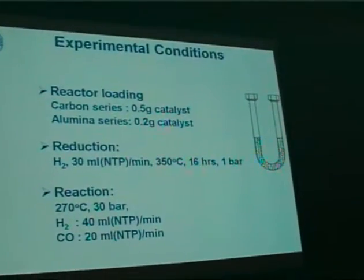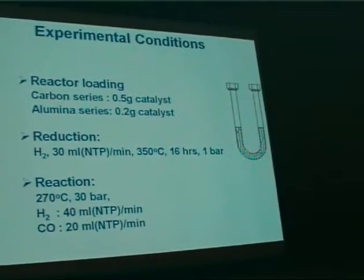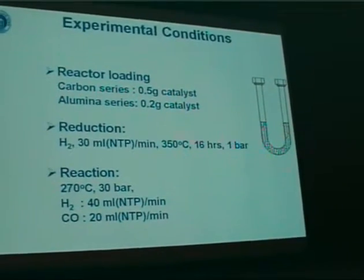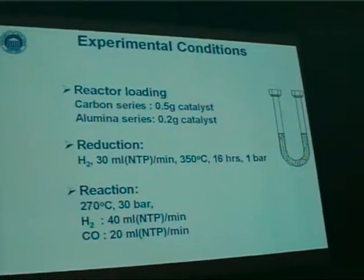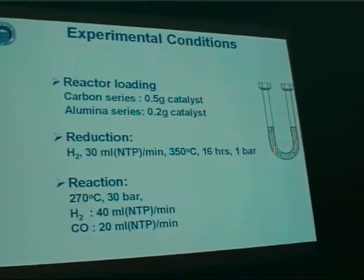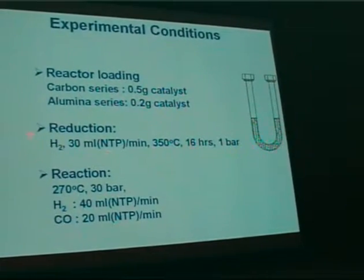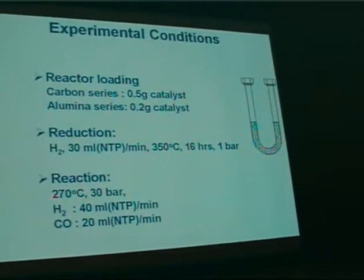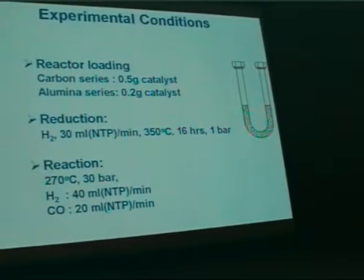We then put these catalysts to the test. In the carbon series we used 0.5 grams of catalyst; in the alumina series, 0.2 grams. Particle sizes used were between 100 and 150 micrometers, and we diluted the material with silicon carbide. Prior to reaction, the catalyst was reduced in pure hydrogen at 350 degrees for 16 hours. Reaction conditions: 270 degrees, 30 bar, and a 2-to-1 hydrogen-to-CO ratio.